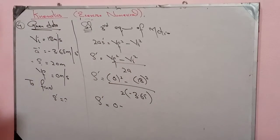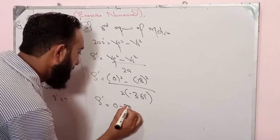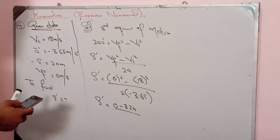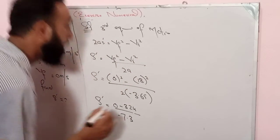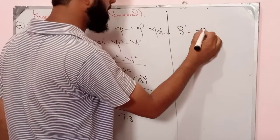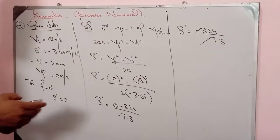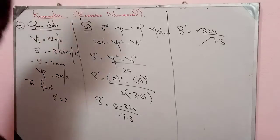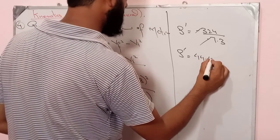18 squared is 324. So s prime equals 324 divided by 2 times 3.65, which is 324 divided by 7.3. This gives s prime equal to 44.43 meters.